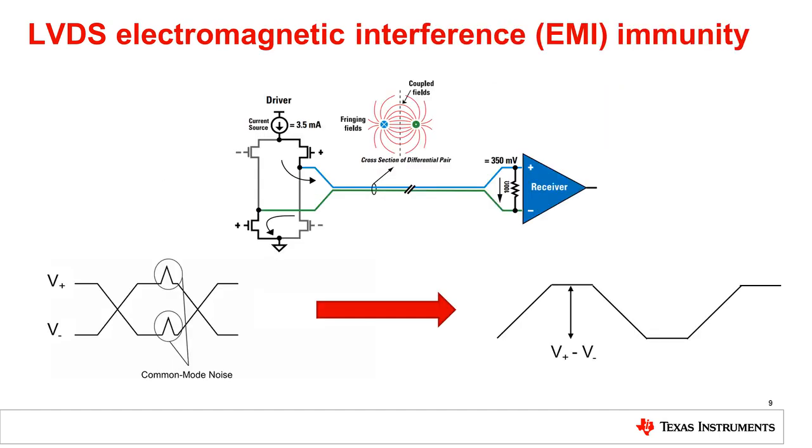One major benefit of LVDS is noise immunity. Since the lanes are tightly coupled together, noise that appears on one lane will likely also be present on the other lane. This noise is canceled out since the receiver only responds to the differences between the two signals.